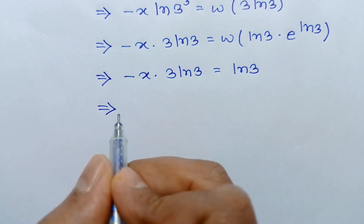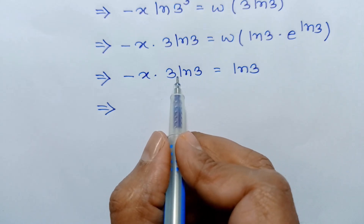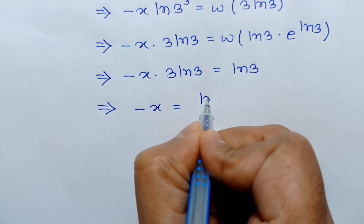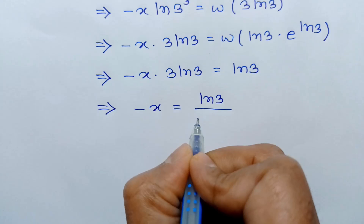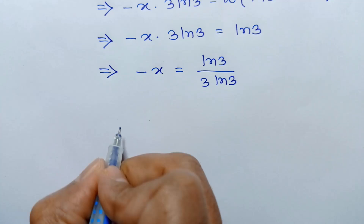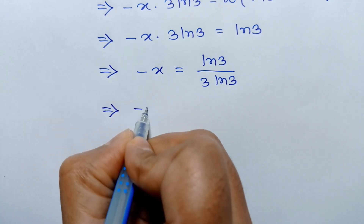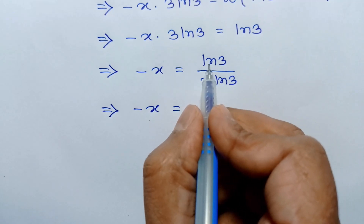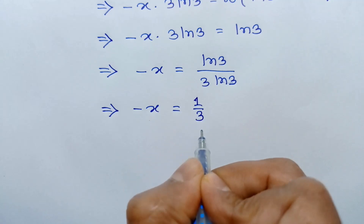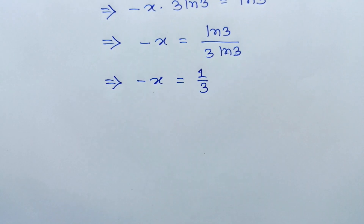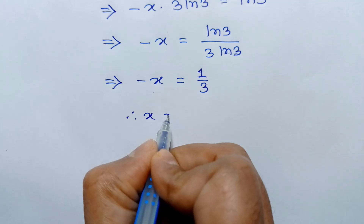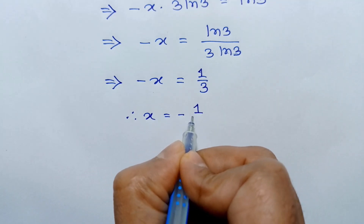Dividing both sides by 3 ln of 3, we get negative x equals ln of 3 over 3 ln of 3. The ln of 3 terms cancel, giving negative x equals 1 over 3. Multiplying both sides by negative 1, we get x equals negative 1 over 3.